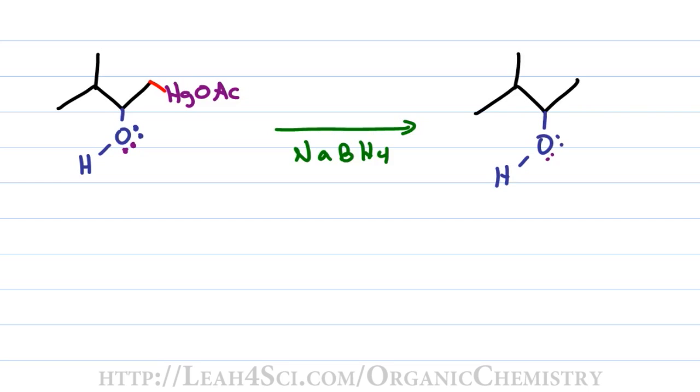And so here we have our final product with the green hydrogen sitting on the primary carbon where mercury used to be and the alcohol sitting on the secondary more substituted carbon in keeping with Markovnikov's rule. Be sure to join me in the next video where I take you through a similar mechanism except we'll use alcohol instead of water as our solvent to get a completely different product.